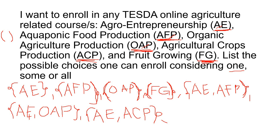For groups of four: AE, AFP, OAP, ACP; AE, AFP, OAP, FG; AFP, OAP, ACP, FG; AE, OAP, ACP, FG — exhaust all combinations. And last, 'all' would simply be writing everything — all five courses together. It's very important that everything is listed; don't just write a simple list without considering the complete instruction.